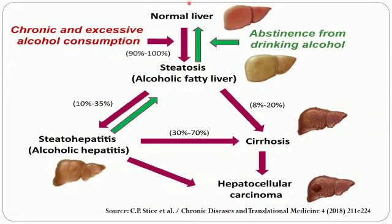Now let us look at the changes a normal liver undergoes on chronic and excessive alcohol consumption. All these changes occur due to alteration in fatty acid metabolism: there is increased fatty acid synthesis, increased triacylglycerol formation, and all of this occurs in the liver. There is also decreased fatty acid oxidation and reduced VLDL synthesis, so lipids cannot leave the liver. They start accumulating, and in 90–100% of cases there is alcoholic fatty liver, also known as steatosis.